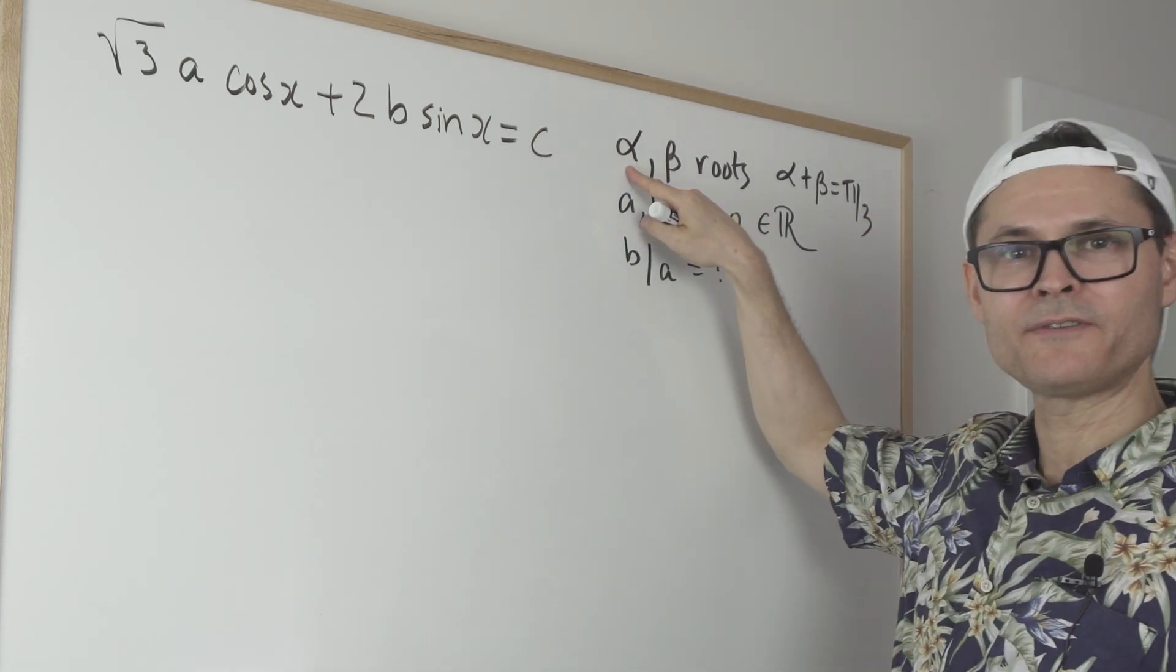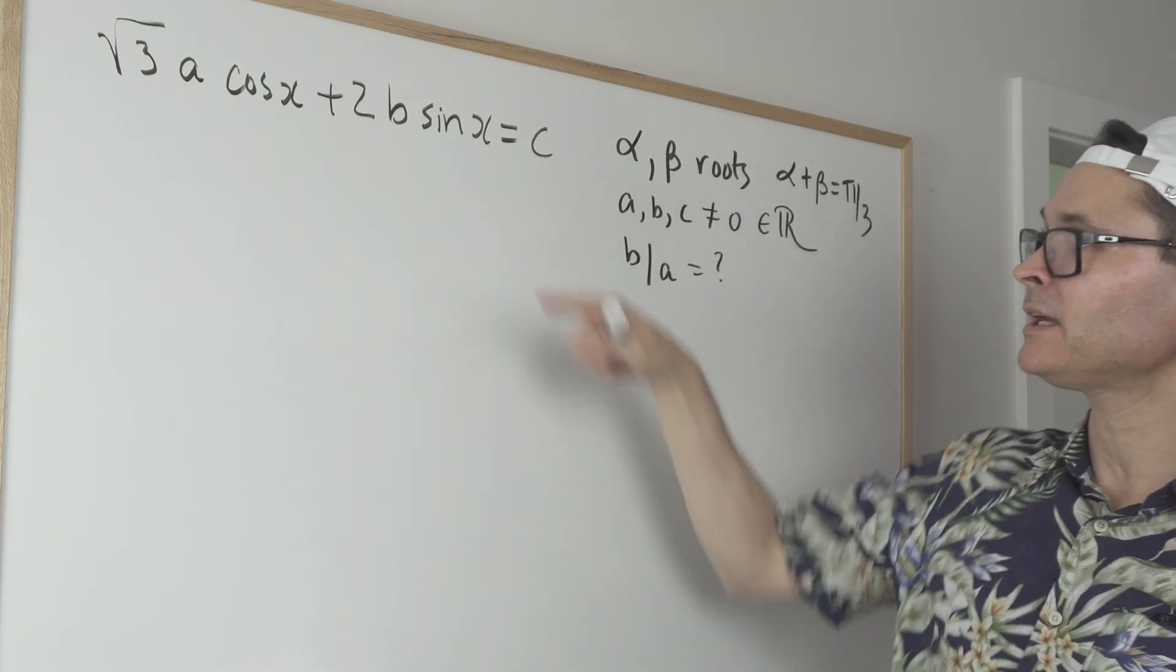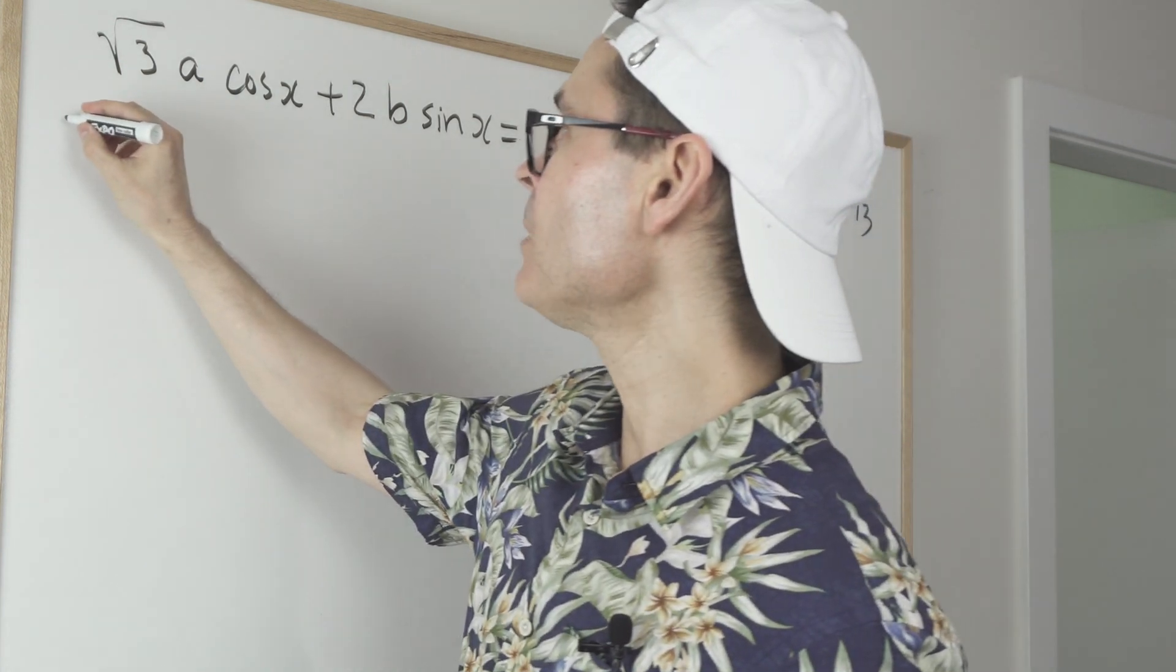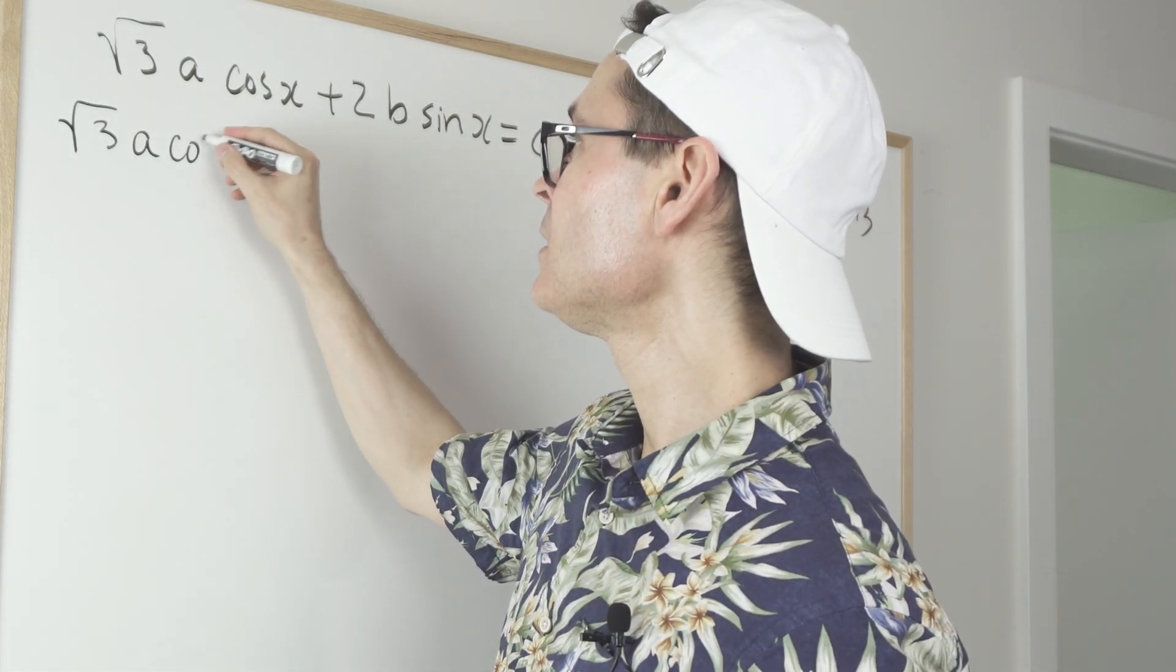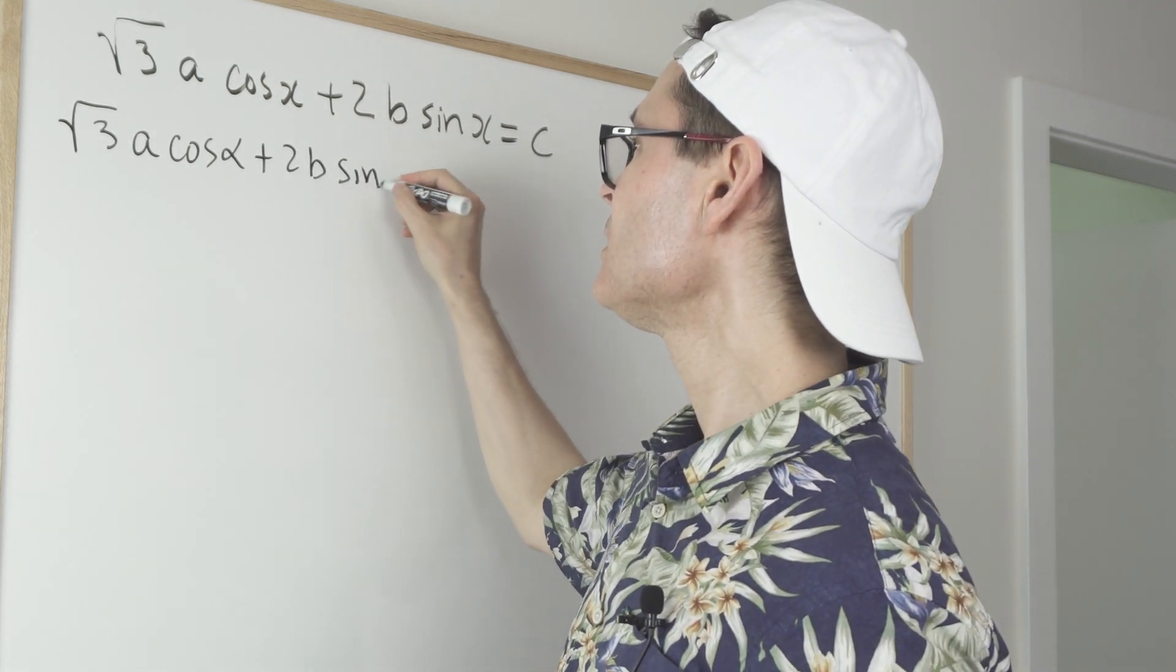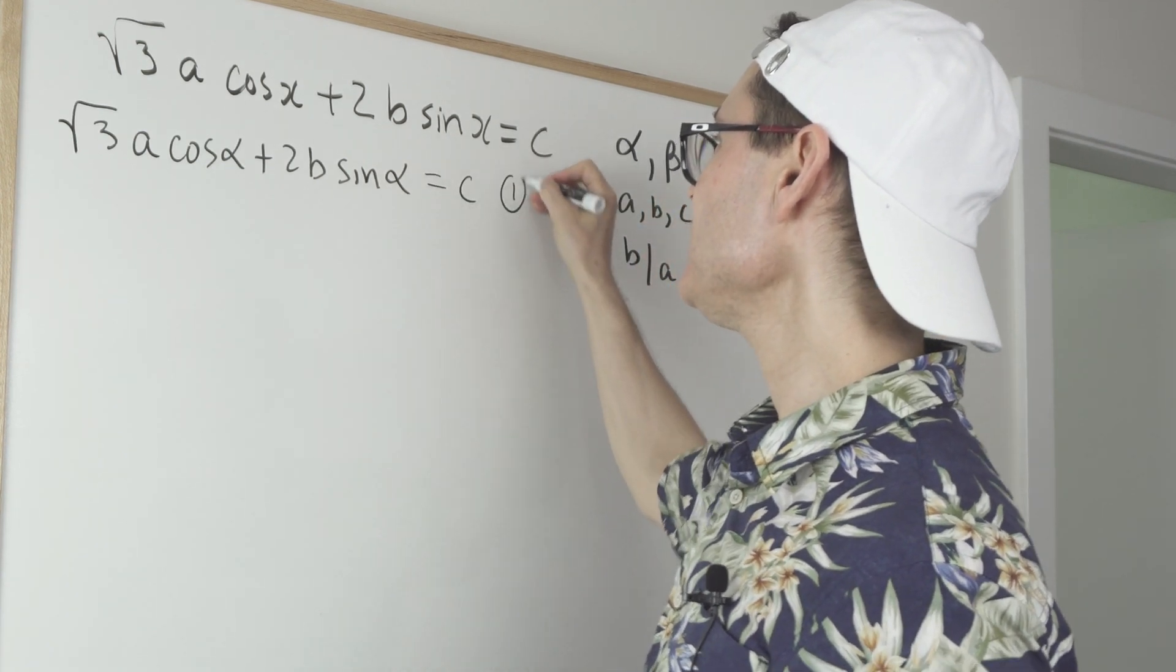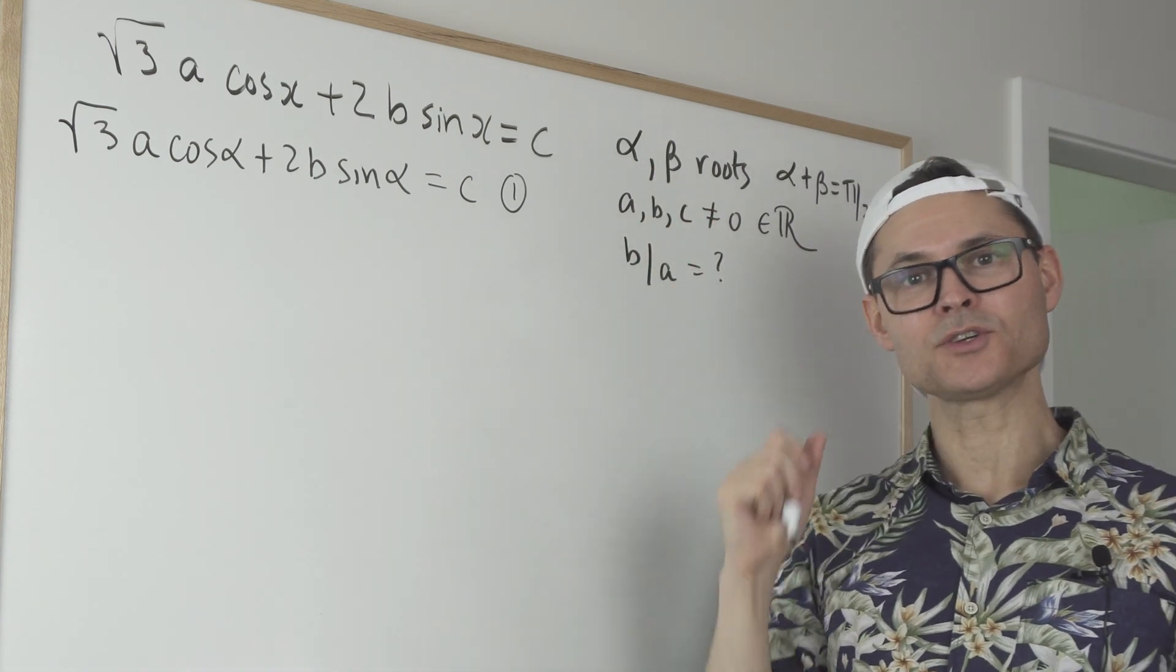Because if alpha is a root, if alpha is a solution to that, it balances it. Meaning I can plug it in and that produces an equation. So in other words, √3 times A cosine α + 2B sine α = C. That's one equation. That automatically comes from the fact that alpha is a root.